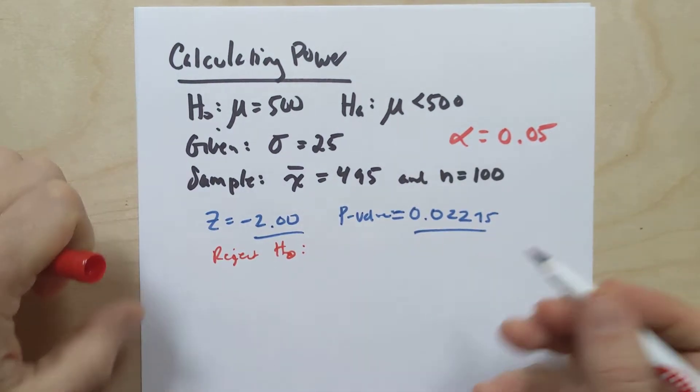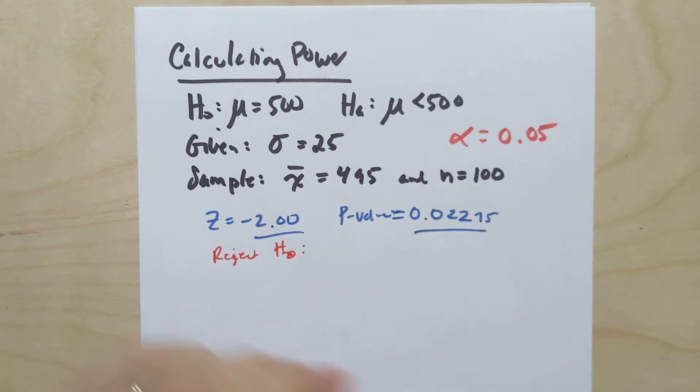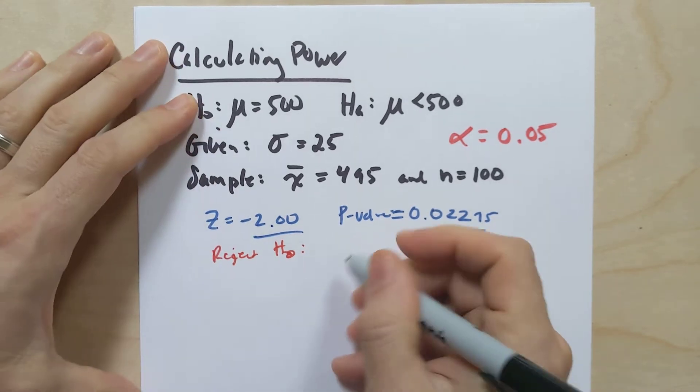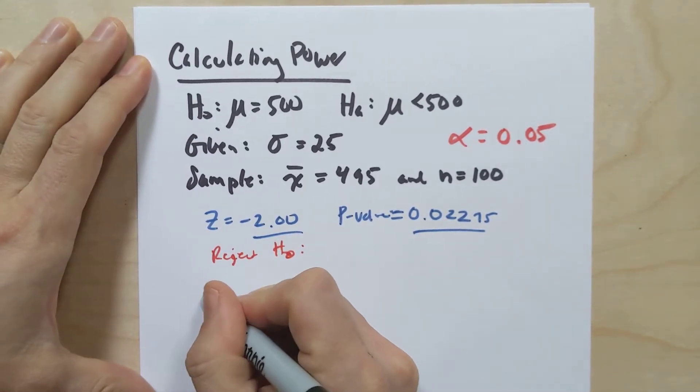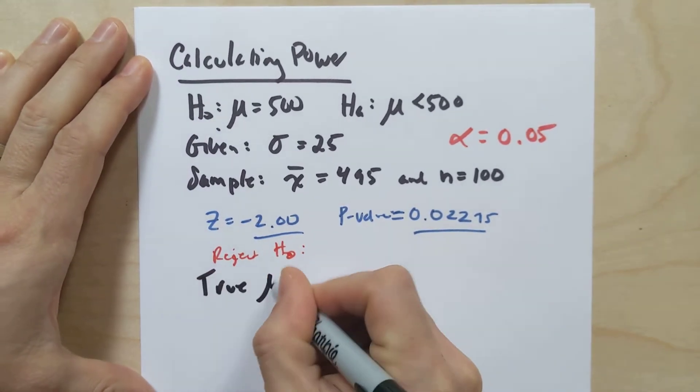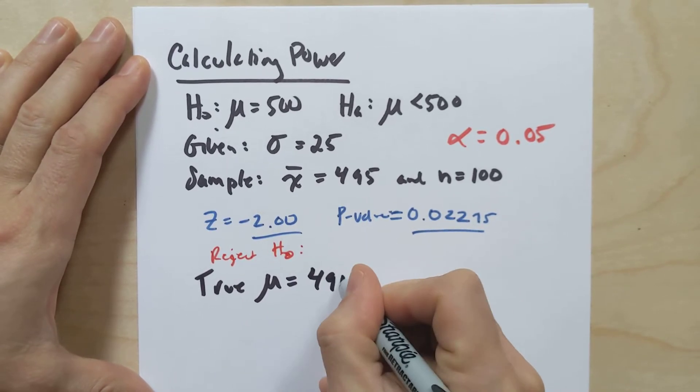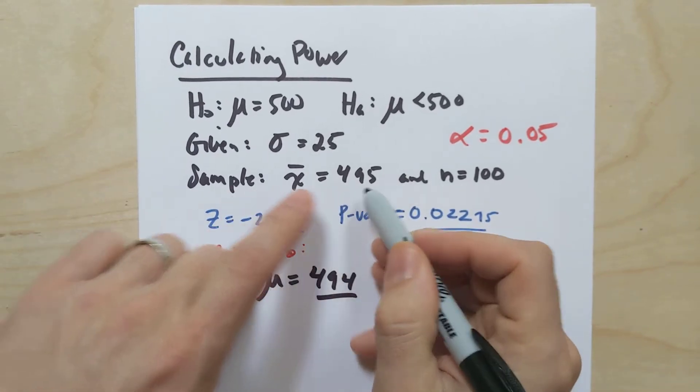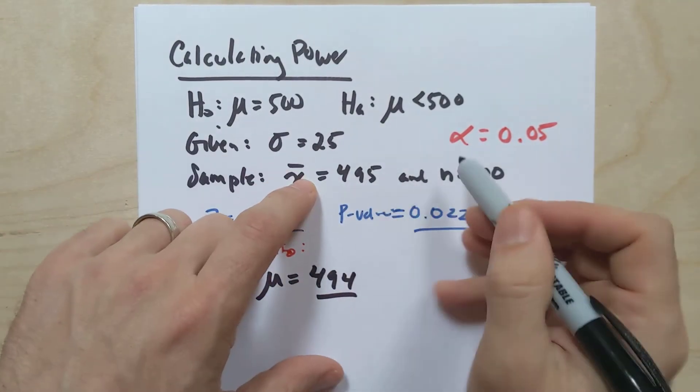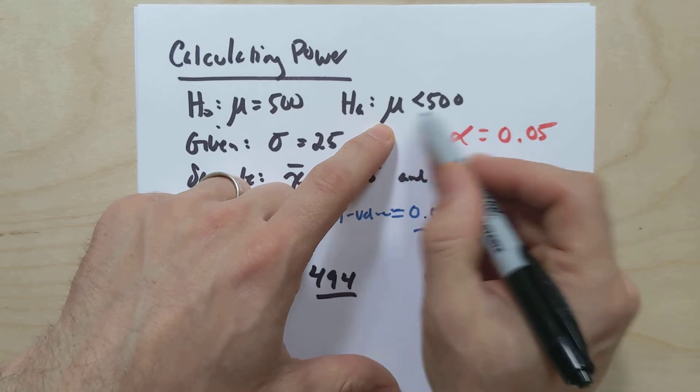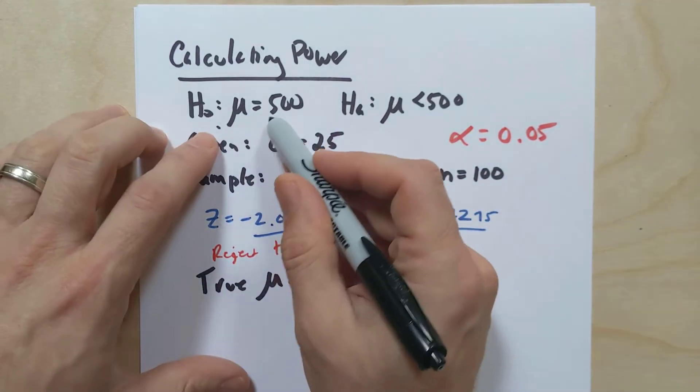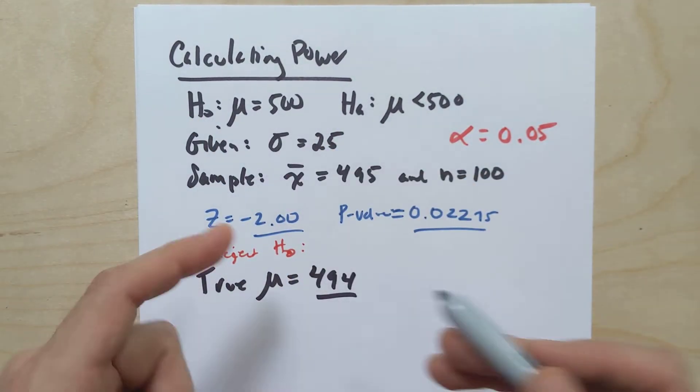So let's just say, for instance, that the alternative hypothesis was true, and let's say theoretically that the true μ was, in fact, something like, say, 494, right? Say it was 494. It was even less than the sample mean that we actually collected, right? So that would definitely mean that the alternative is true, and the null hypothesis is false. It definitely was not 500. I'm telling you right now, it's 494.